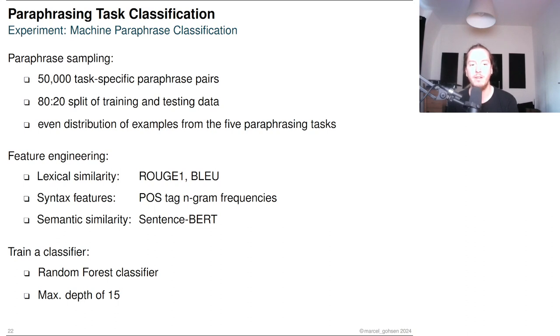Since the paraphrases from different datasets were all from different topical domains, we used features that do not compare semantic representations between paraphrase pairs. Instead, we used similarity features between an original and a paraphrase and syntactical features of a paraphrase pair. We used a random forest classifier with a maximum depth of 15 to prevent overfitting.